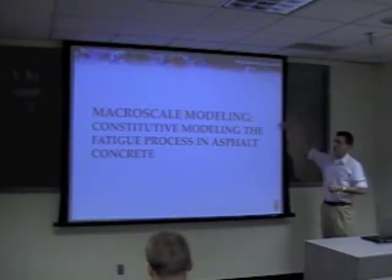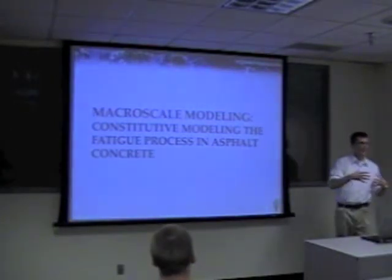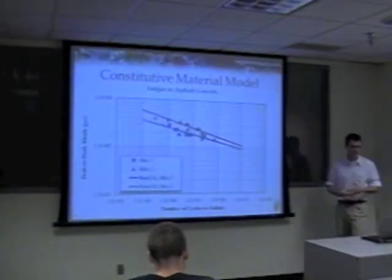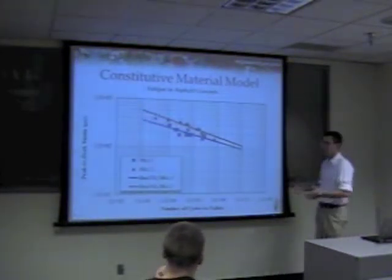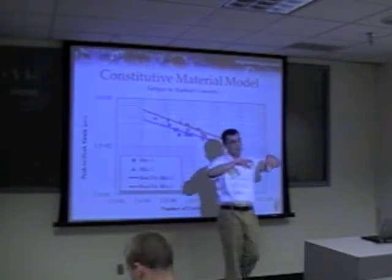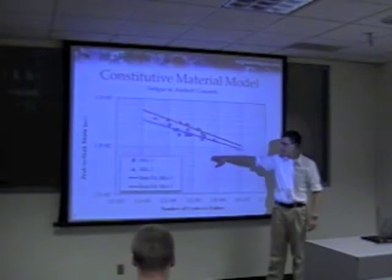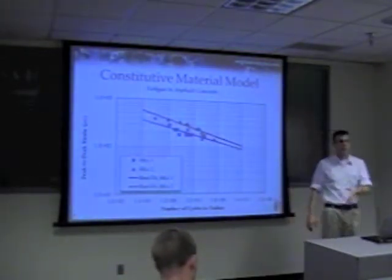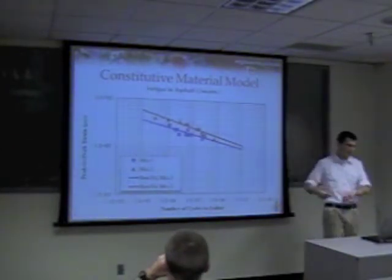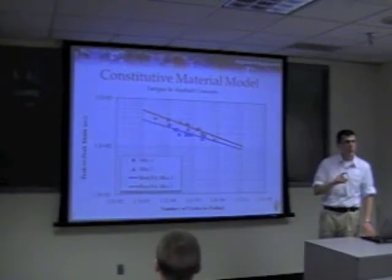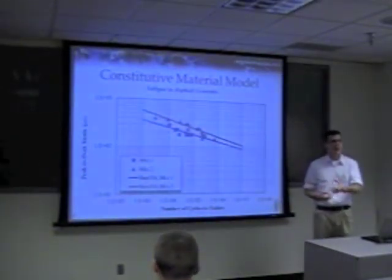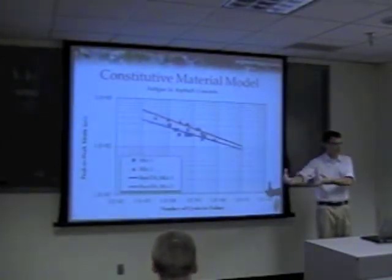The first example is macro-scale modeling of the mixture — called macro-scale because it's a scale we can physically see and handle. To model the fatigue process: as I increase my input strain, bending the beam more, I'll have to do that fewer times to get it to fail. More strain equals fewer cycles to failure. In a performance model we might fit this to a simple relationship, but as a constitutive law, we want to understand the mechanics and mechanisms happening inside the body and develop the model to those mechanisms instead of the end-product performance measure.